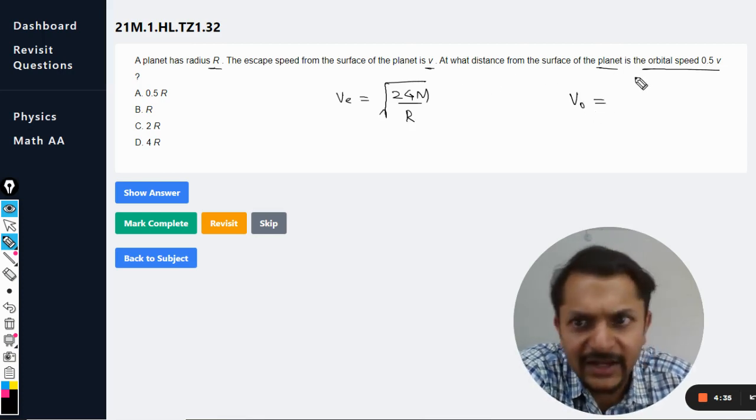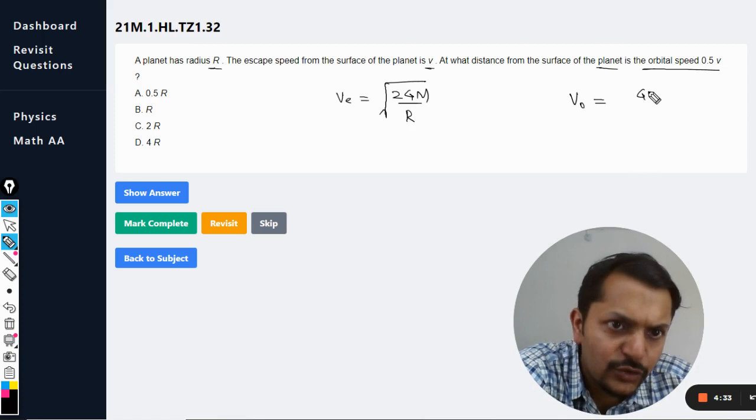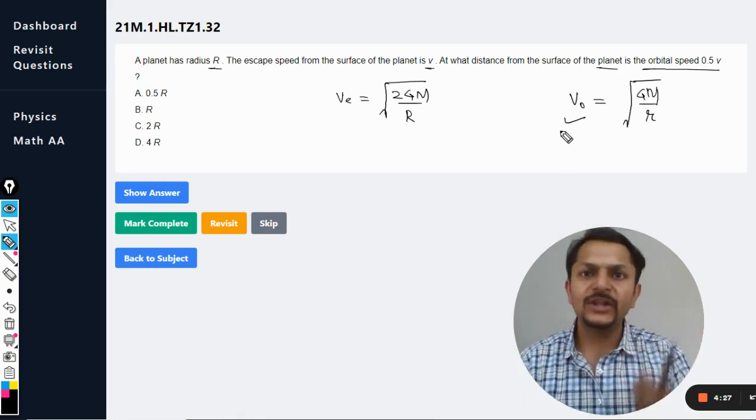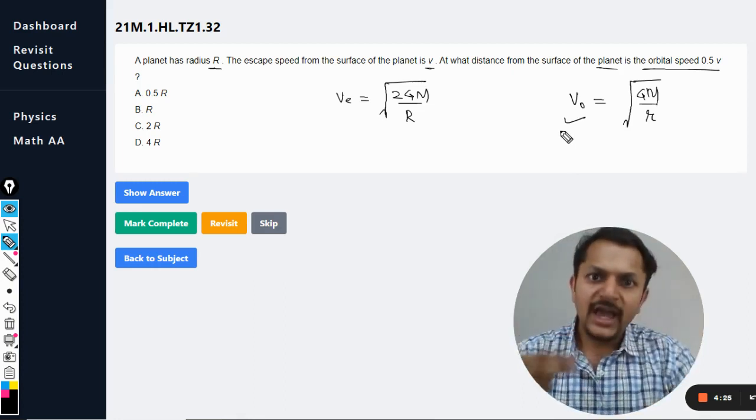In the orbit at a distance small r, we know that is given by root of GM by small r. This is the orbital speed - the speed of the satellite in the orbit.